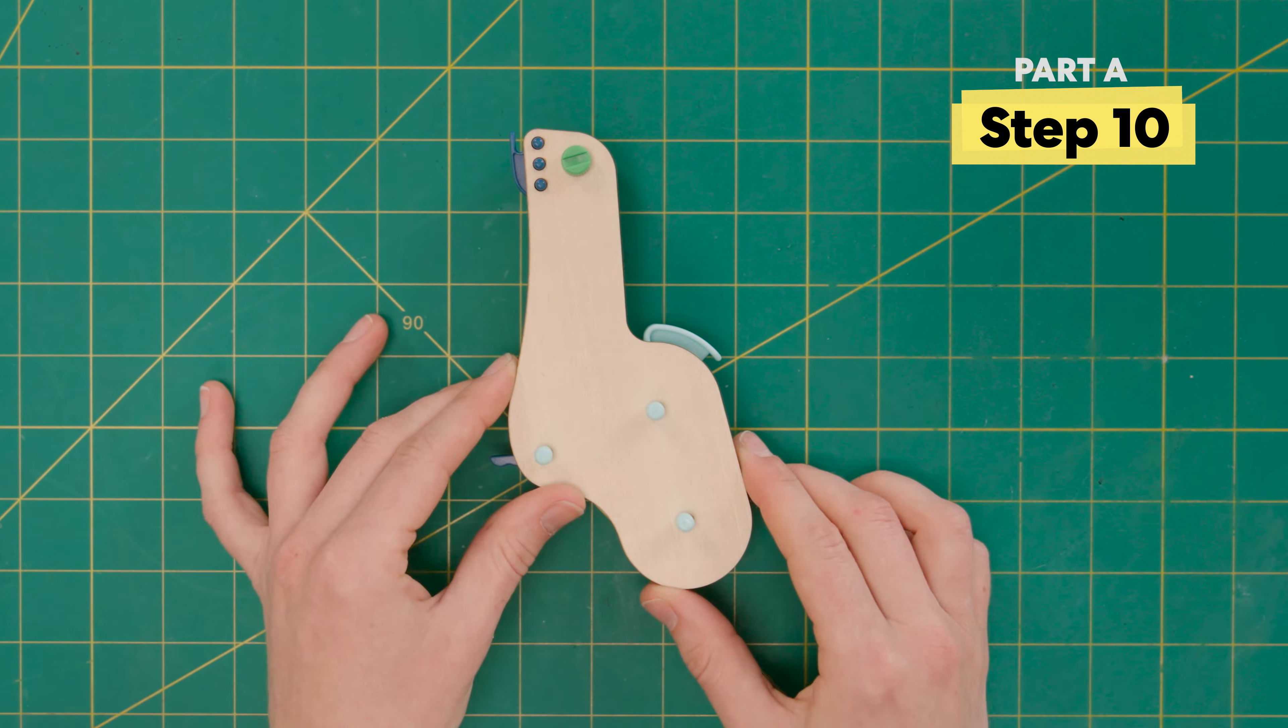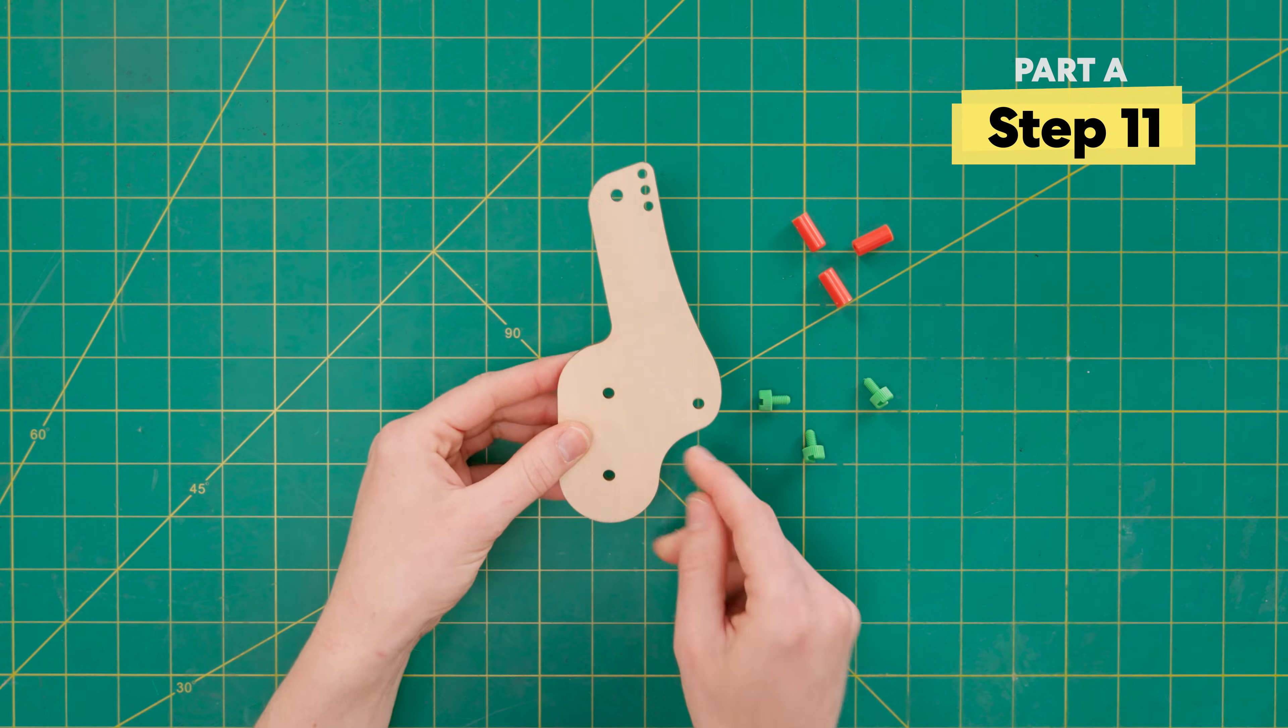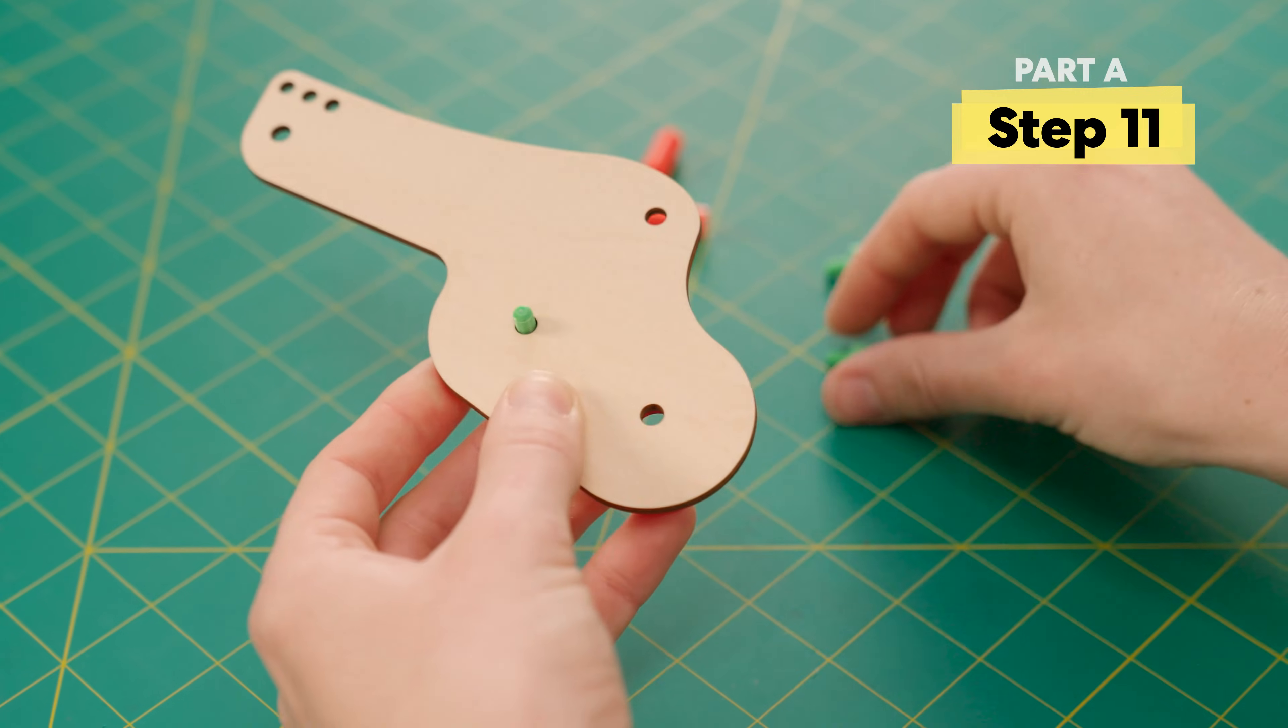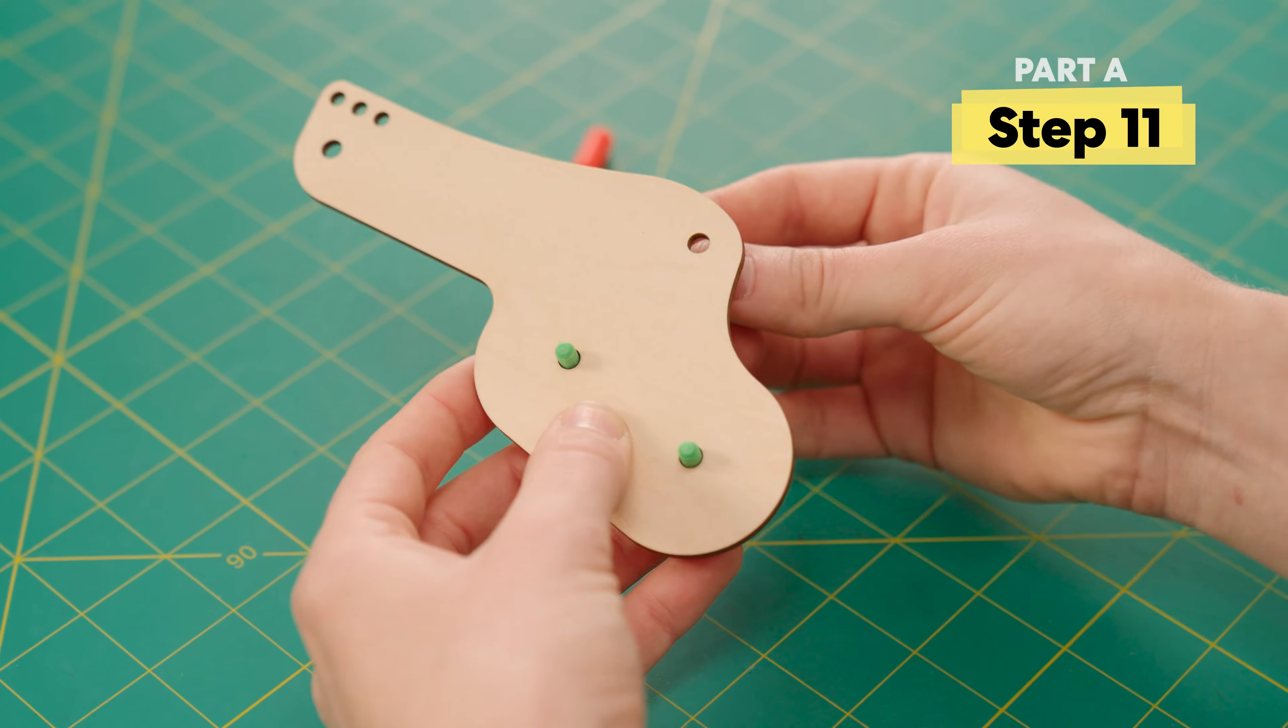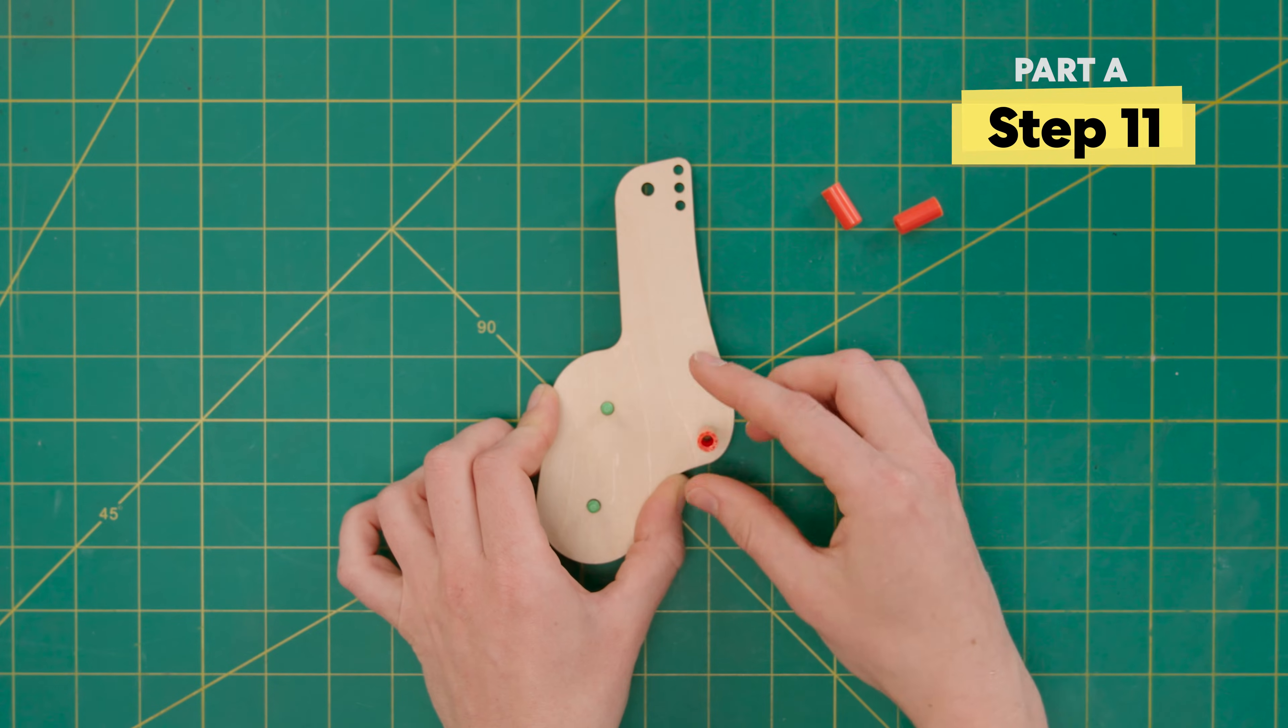We built one of the handles. Next, find the handle piece with the red foam and flip it over. We're going to do the same thing here and attach three green bolts up through the bottom. Secure them on with three spacers.